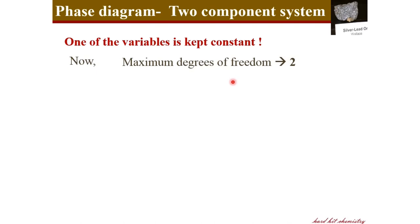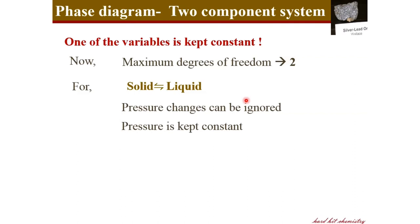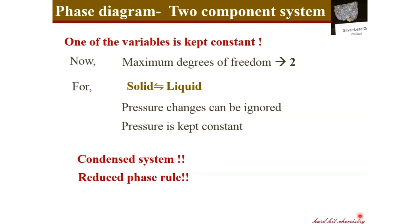We define the maximum degrees of freedom to be two. For a solid-liquid equilibrium, pressure is very least significant — pressure changes can be ignored on this equilibrium. So pressure is kept constant and assumed to be constant for this kind of two-component systems, making it easy to represent changes on a two-dimensional graph. The system becomes a condensed system, with the significance of pressure neglected.